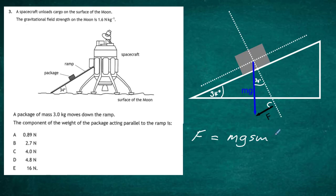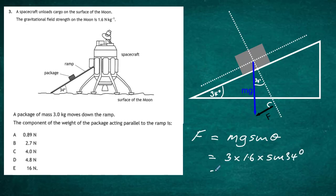We need to put in the weight, but be careful — we've done many of these problems on planet Earth where g is 9.8, but this time we're on the moon, so the gravitational field strength is 1.6. For a mass of 3 kilograms: 3 × 1.6 × sin(34°). Working that out gives 2.68 newtons, and rounding to two significant figures gives 2.7 newtons.